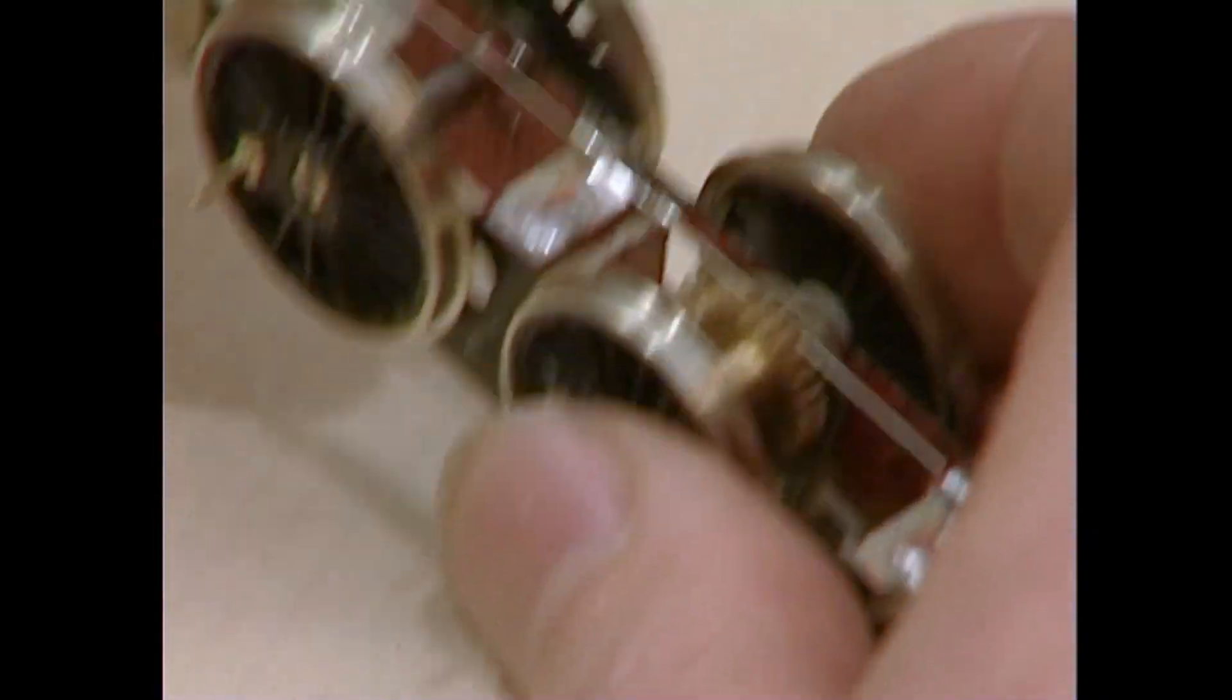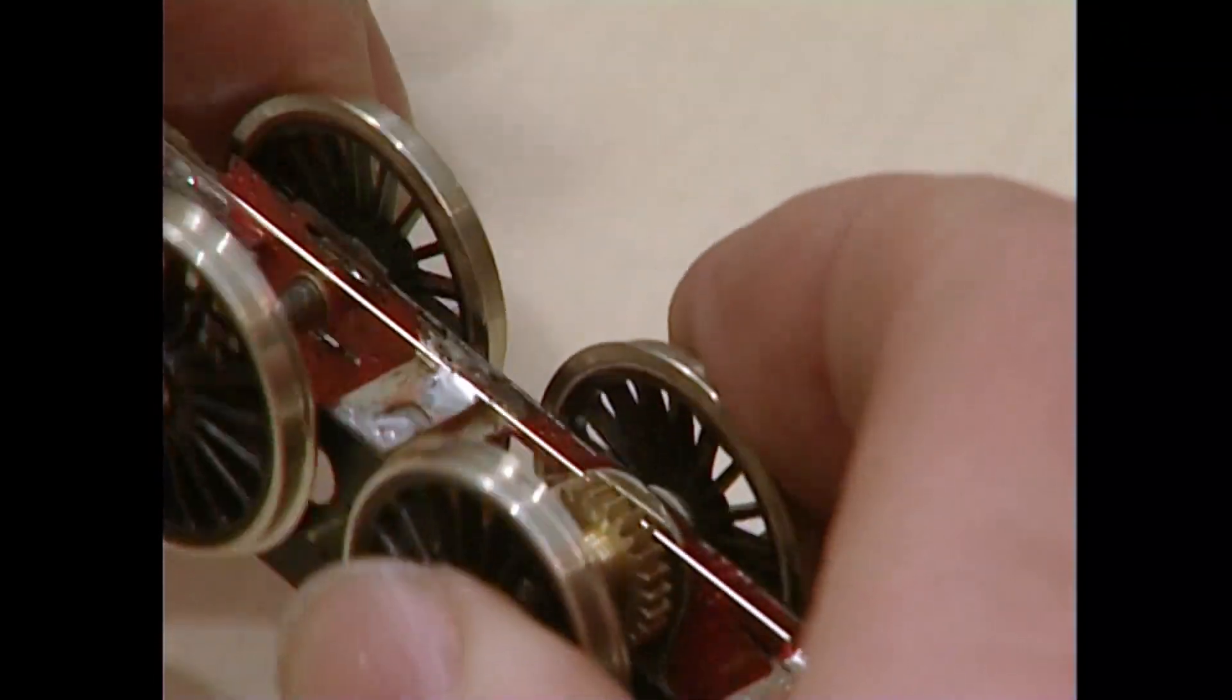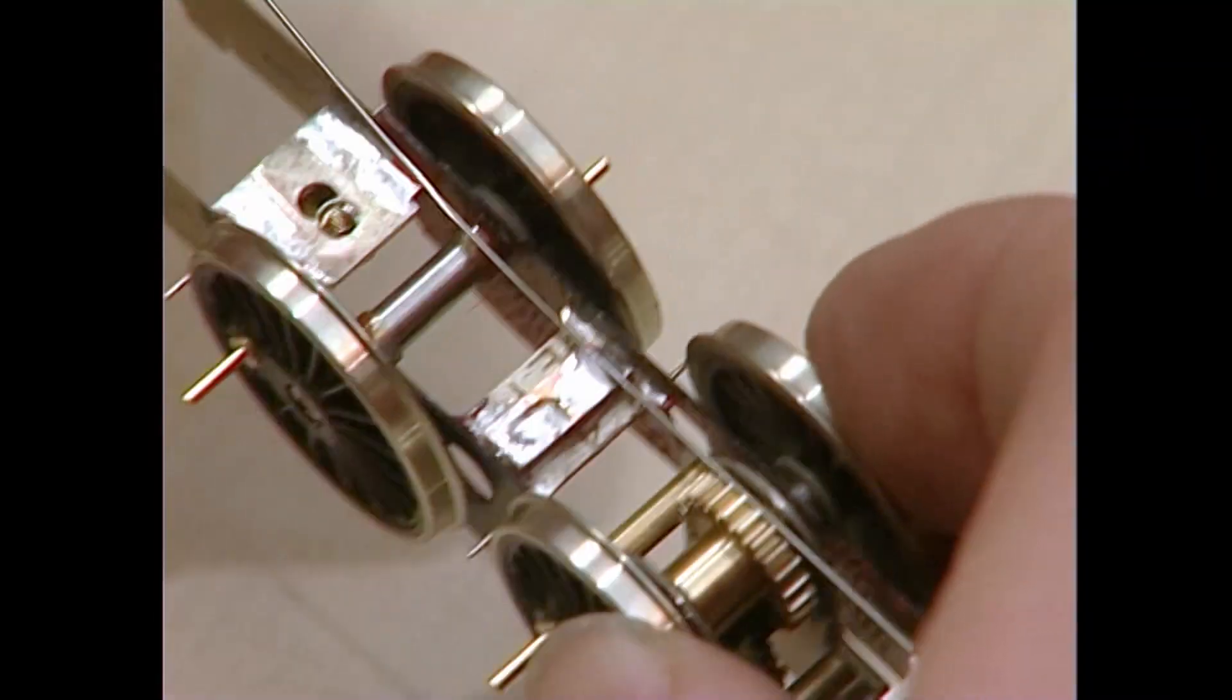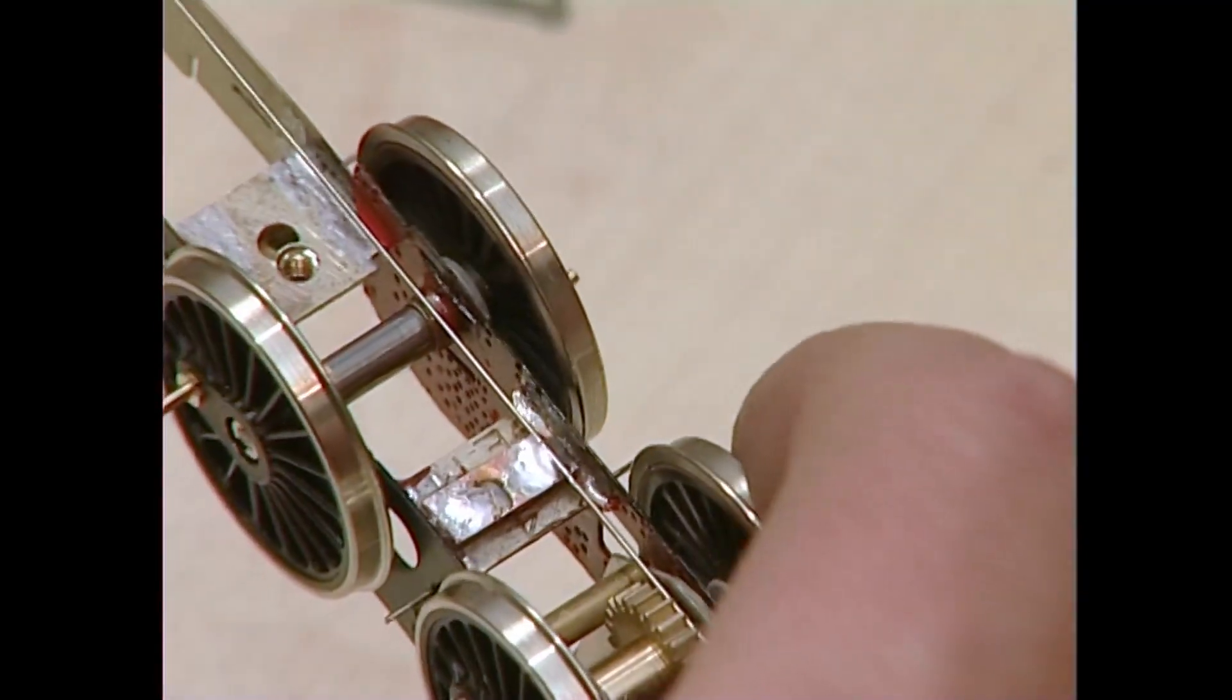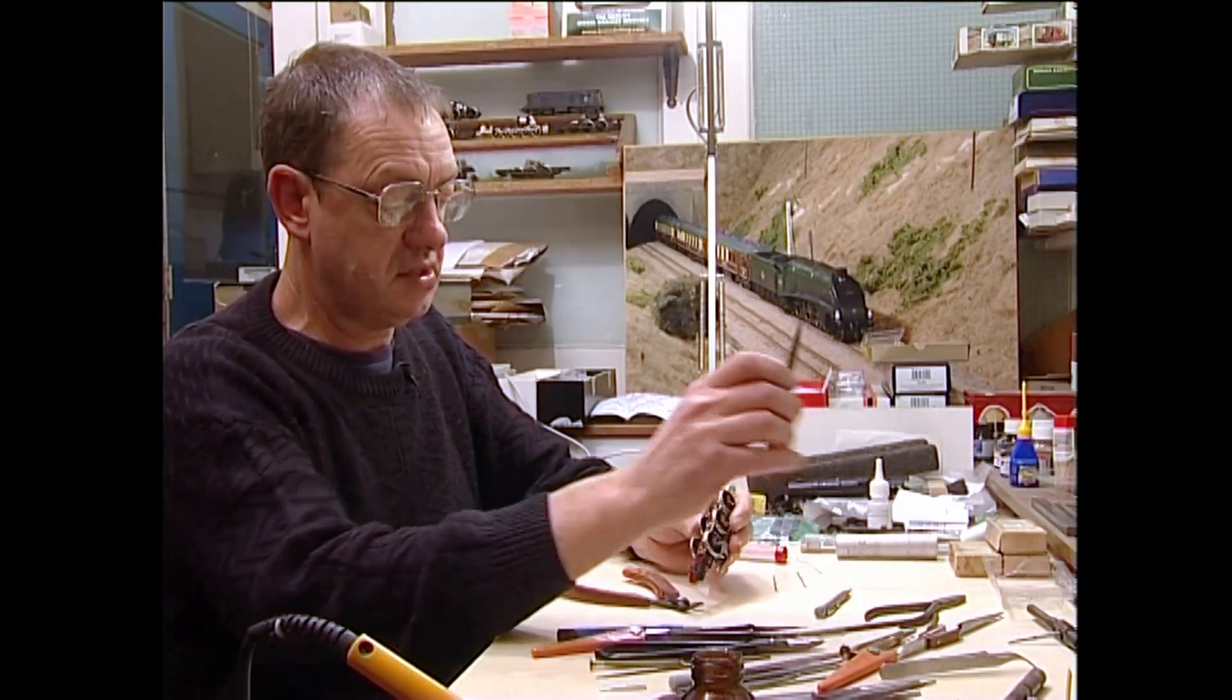Now, having said that there's flux already in the solder, I still add a small amount more just to make sure that it flows as I want. Now, you can just check the joint, make sure it's nice and firm.